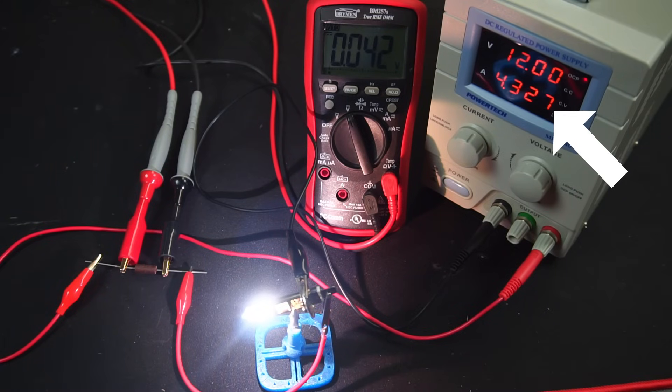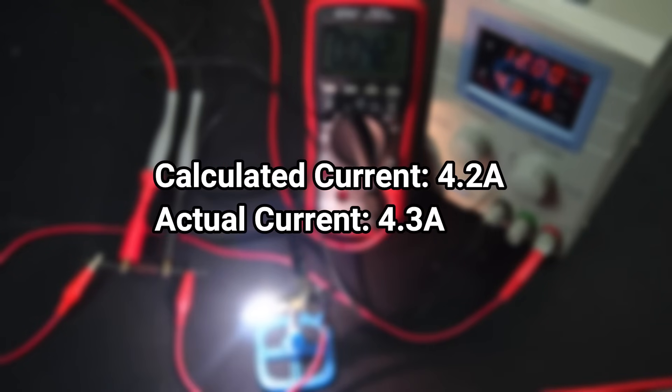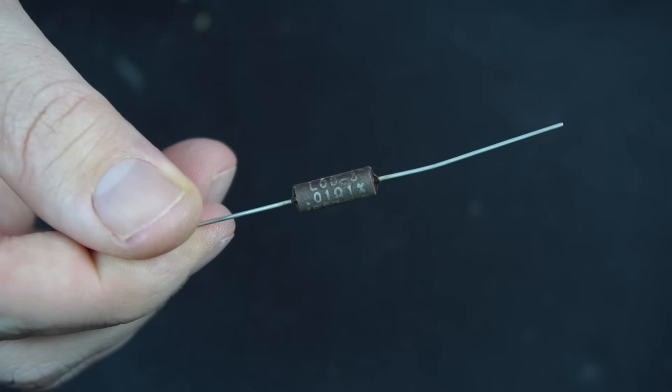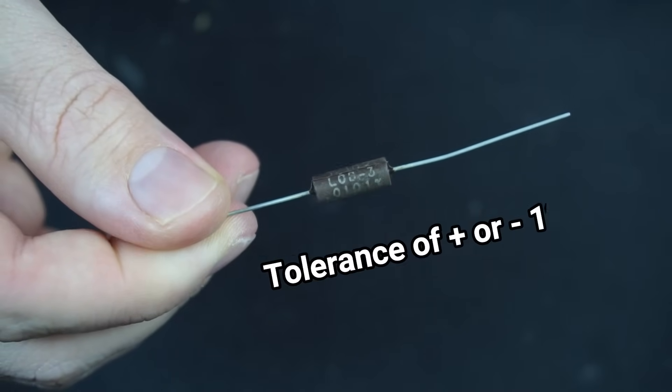Press calculate, and that works out to be 4.2 amps of current. Now if I uncover the ammeter on my power supply, it reads 4.3 amps.